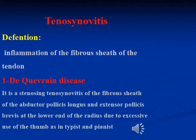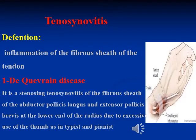Coming to the second topic: tenosynovitis, which means inflammation of the fibrous sheaths of the tendon. The most famous type is De Quervain's disease, which is a stenosing tenosynovitis of the fibrous sheaths of both abductor pollicis longus and extensor pollicis brevis at the lower end of the radius, due to excessive use of the thumb, as in typists and pianists.